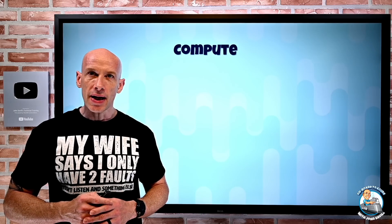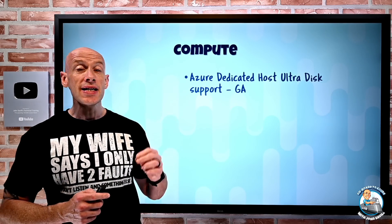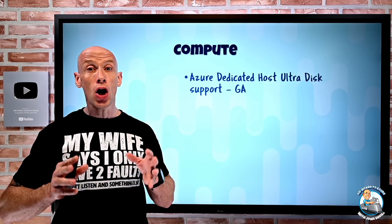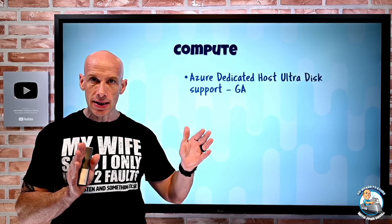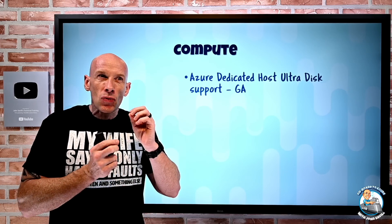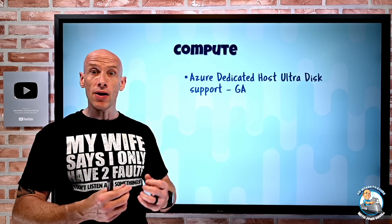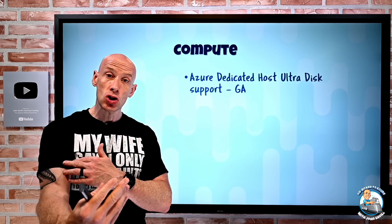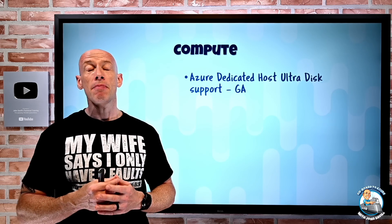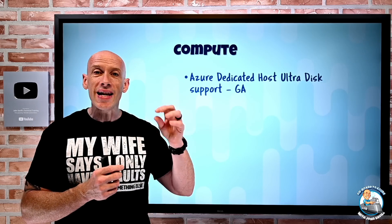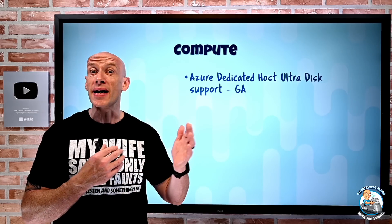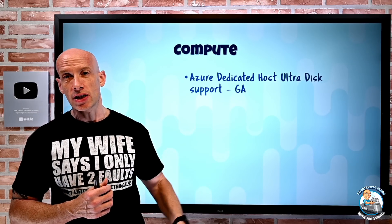In terms of updates on the compute side, Azure Dedicated Host now supports UltraDisks. Azure Dedicated Host lets me buy out the entire capacity of a node — a server in an Azure Data Center of a certain SKU — and fill it with the corresponding VM SKU of different sizes. That means I'm not sharing the underlying hardware with another tenant, and it gives me more flexibility on things like maintenance windows. Now I can use UltraDisks with that.